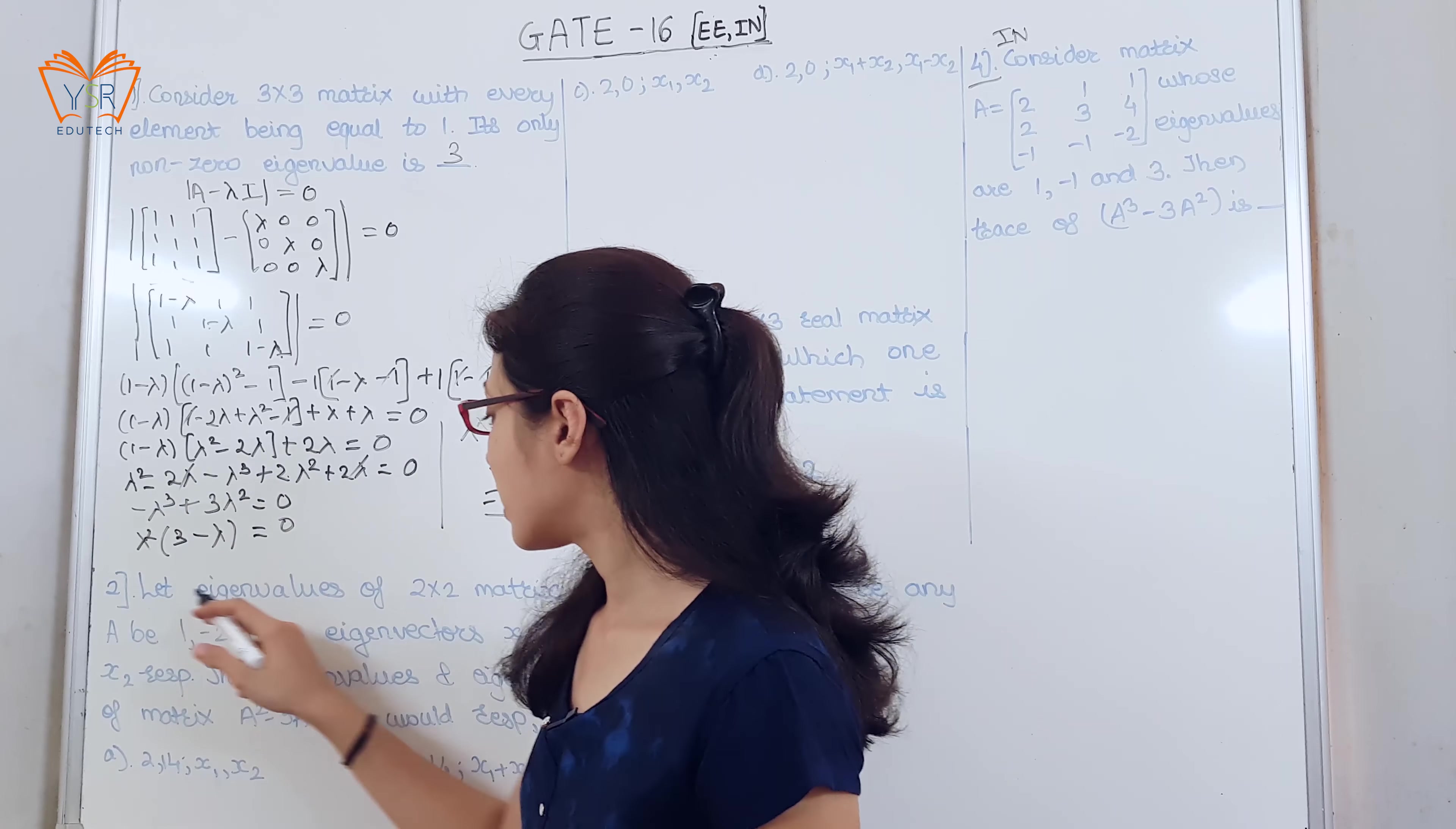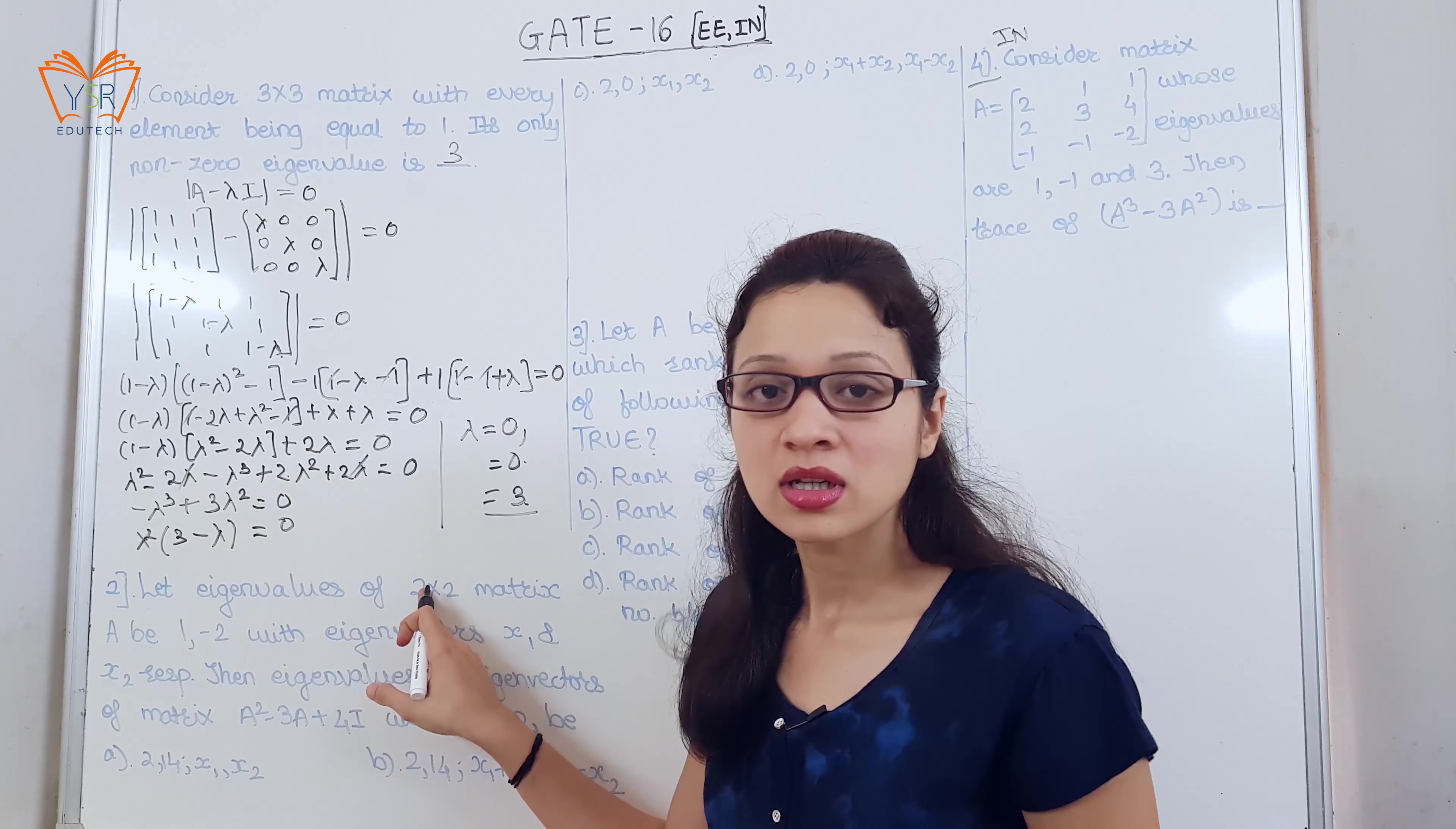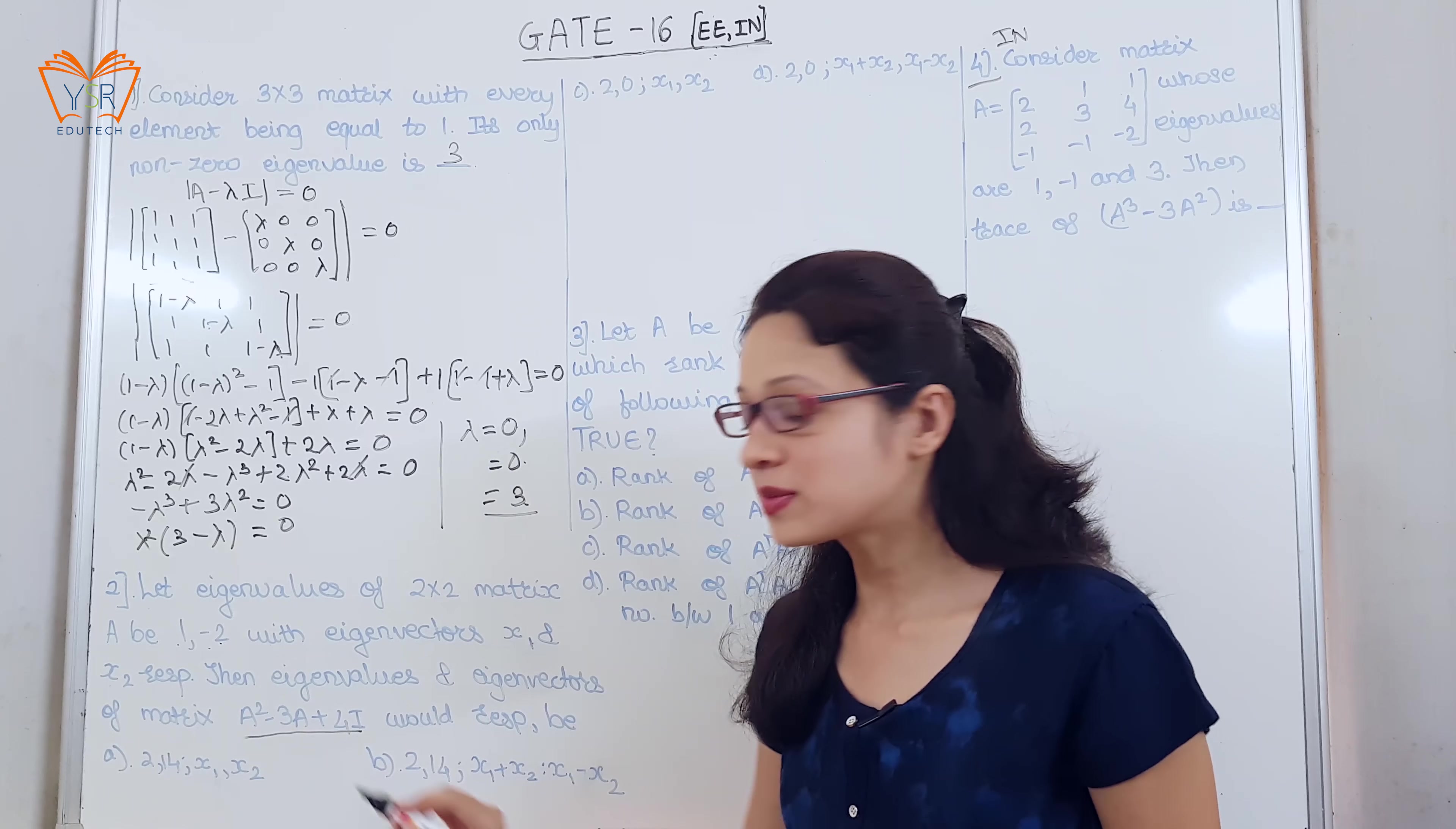Second example, let eigenvalues of 2 into 2 matrix A be 1 and minus 2 with eigenvectors x1 and x2 respectively. Then the eigenvalues and eigenvectors of the matrix A square minus 3A plus 4I would respectively be. So, they have given one 2 by 2 matrix. Since it is 2 by 2 matrix there will be 2 eigenvalues. Those 2 eigenvalues are 1 and minus 2. For eigenvalue 1 the eigenvector is x1. For eigenvalue minus 2 the eigenvector is x2.